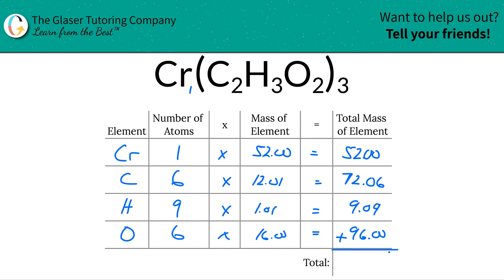To find the total mass of the entire compound, all you literally have to do is now just add up this particular column. So when you add that up, you get a total mass of 229.15. Since we're solving for molar mass, the units here are in grams per mole.